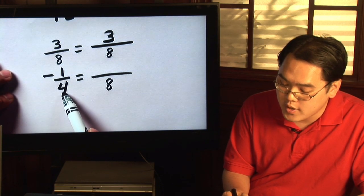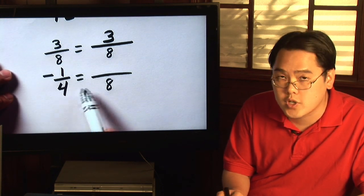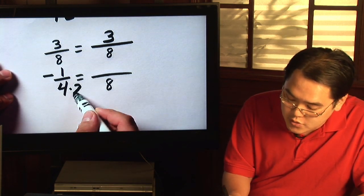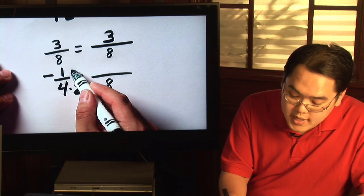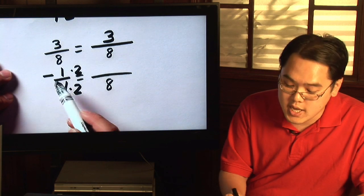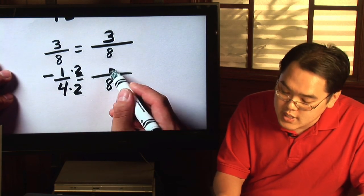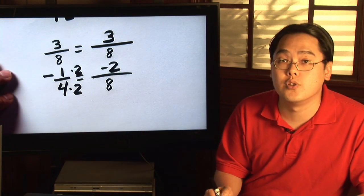But obviously you have to multiply 4 by something to get 8. Well, 4 times what is 8? It has to be 2. And whenever you multiply the bottom, you have to multiply the top by the exact same number. Negative 1 times 2 is negative 2.